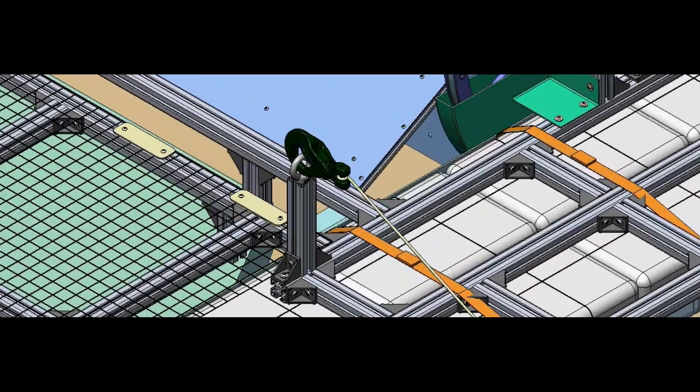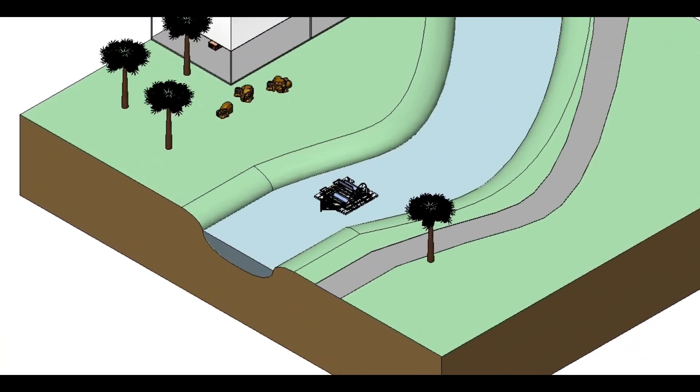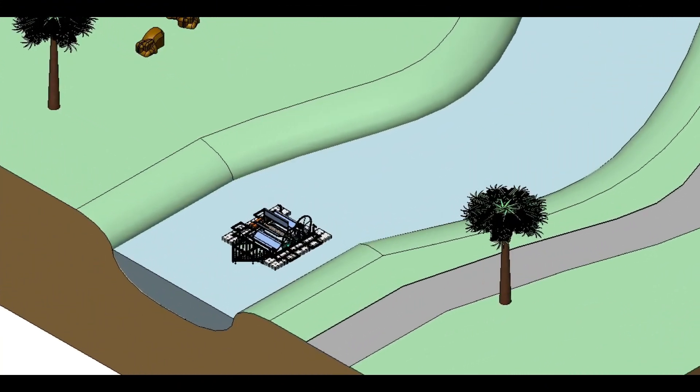When the waterwheel is operating on the river, it is anchored at the riverside to ensure stability. With the floating pontoon, the waterwheel is able to move from one location to another.